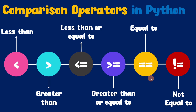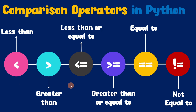So these are the various comparison operators that we have in Python: less than, greater than, less than or equal to, greater than or equal to, equal to, and finally not equal to. Remember, all these comparison operators are binary operators and the result will always be a boolean value, so it can either be true or false.